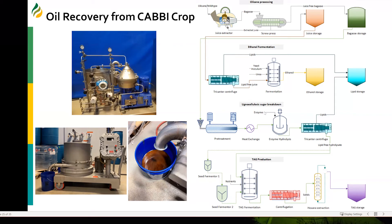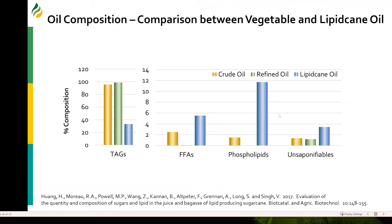Most of the oil was recovered from the bagasse fraction, which was one issue. Secondly, the amount of free fatty acids was very high — the oil had very high levels of phospholipids, polar lipids, and free fatty acids compared to crude vegetable oils, more than twice the amount of free fatty acids seen in crude vegetable lipids. That leads us to the question of how we can separate these free fatty acids and polar lipids so they don't interfere with biodiesel production.